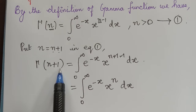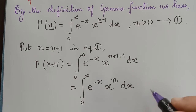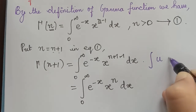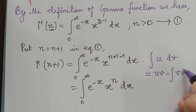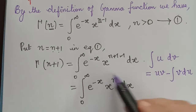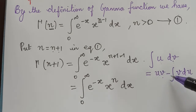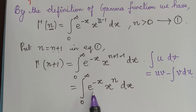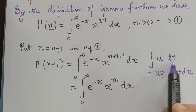Now, in order to find gamma of n plus 1, we need to integrate this using the method of integration by parts. The integration by parts formula is: integral u dv equals u·v minus integral v·du. We will identify u and dv from the integrand and substitute into this formula to find the integral from 0 to infinity of e to the power negative x, x to the power n, dx.